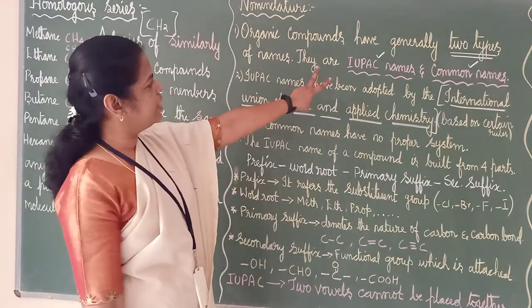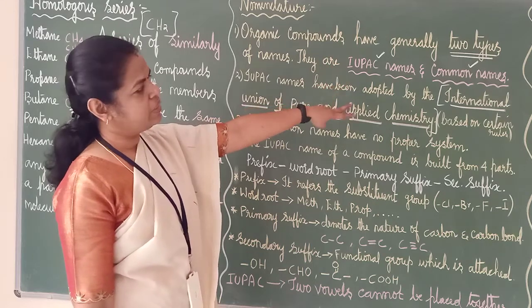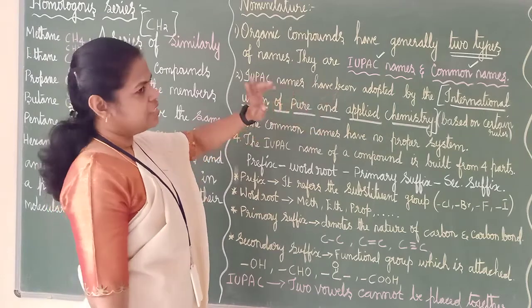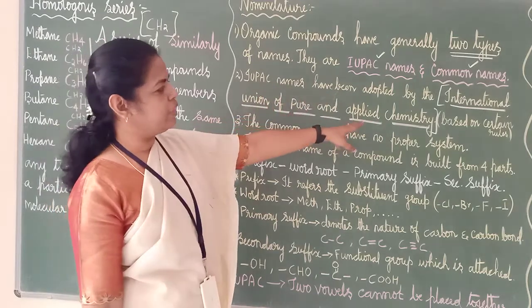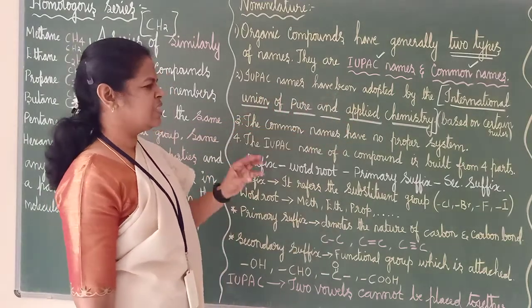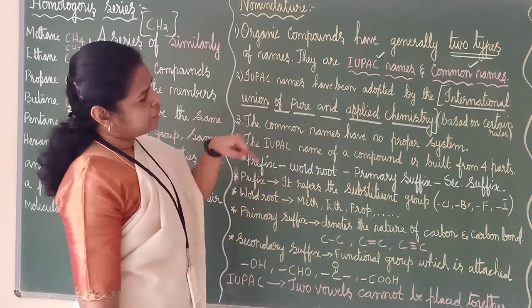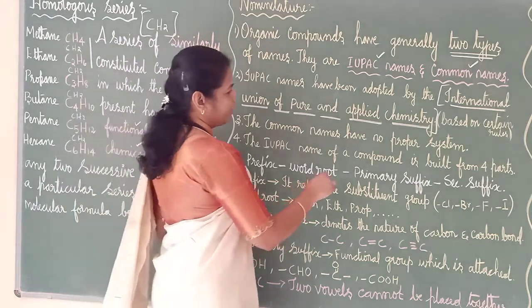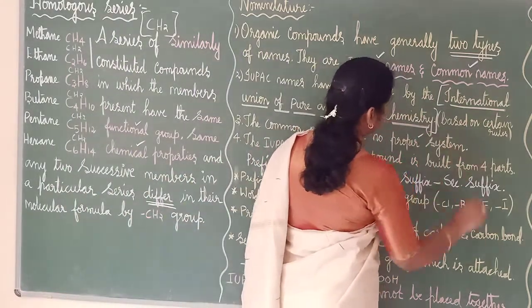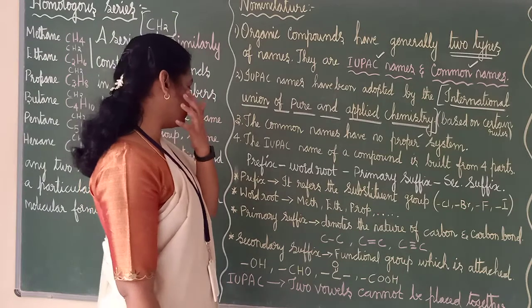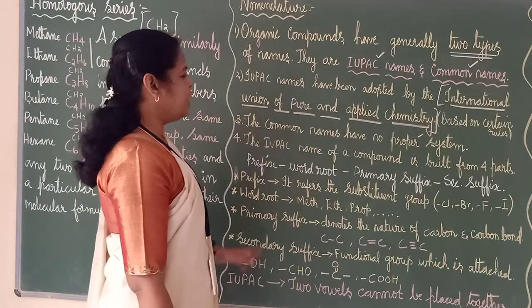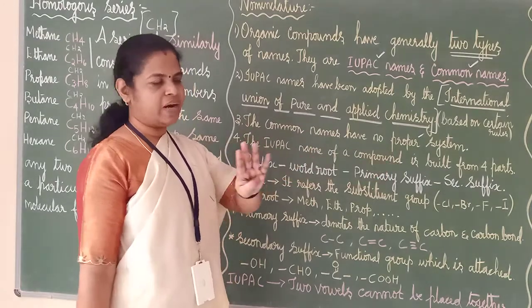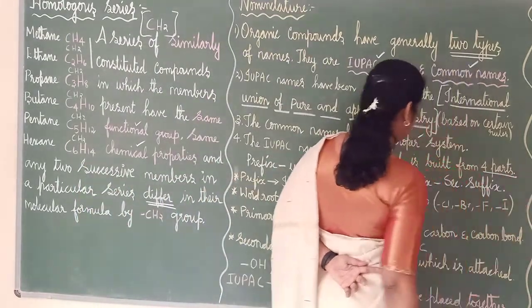There are two types of names — IUPAC name and common name. IUPAC name is by International Union of Pure and Applied Chemistry and there are certain rules to be followed. The common name has no proper system. IUPAC name of a compound is built from four parts — that is very important.